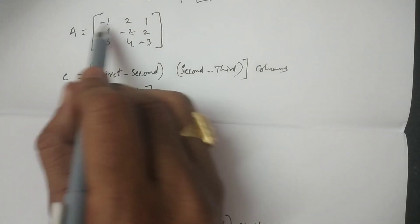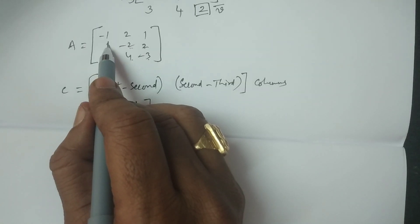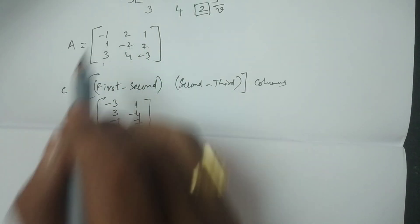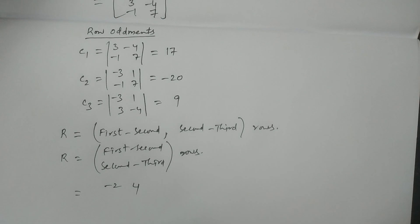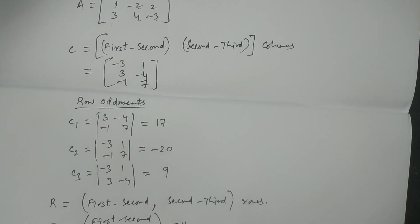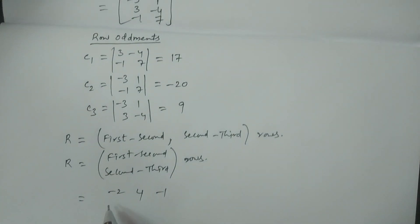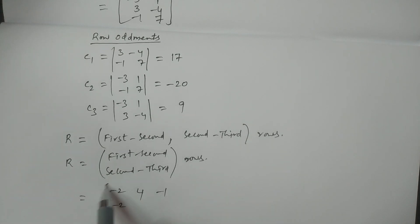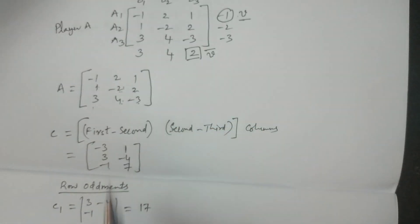For first row minus second row: minus one minus two is minus two; one minus of minus two is plus four; three minus four is minus one. That is the first row of R. For second minus third rows: one minus three is minus two; minus two minus four is minus six; two minus of minus three is five. So the row matrix R has rows: minus two, four, minus one and minus two, minus six, five.